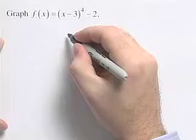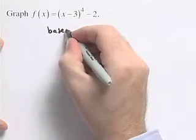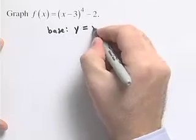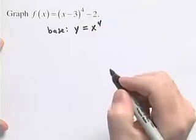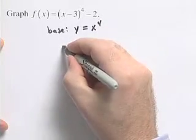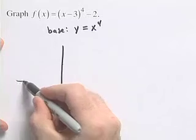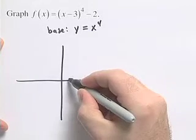What we're going to do first is identify that our base function is y equals x to the 4th, and we're going to graph that first. So we'll sketch a little graph and we'll just plot a couple of points.